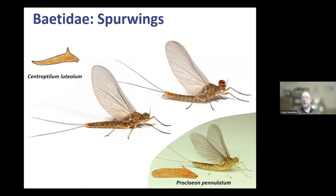For the spur-winged species, the shape of the hindwing spur is key. In Centroptilum luteolum, the spur has a point, whereas in Procloeon pennulatum it's rounded. Procloeon pennulatum also characteristically holds its wings slightly splayed at rest, whereas Centroptilum holds them closed — a useful little giveaway for that species.